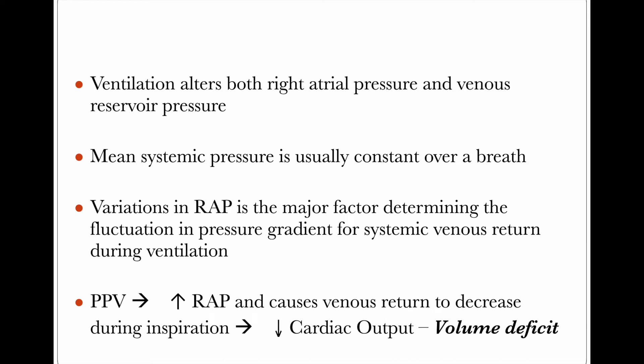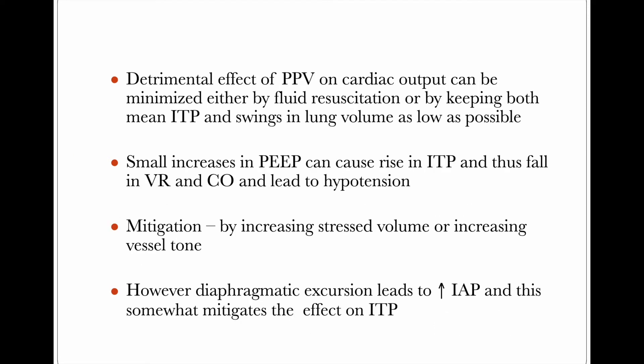If there is high pressure in the lungs because of positive pressure ventilation and there is a fall in cardiac output due to reduced venous return, that means the patient is in volume deficit. If we give more volume, more can be delivered to the left heart, increasing cardiac output. The detrimental effect of positive pressure ventilation on cardiac output can be minimized by fluid resuscitation to address volume deficit, or by keeping the mean intrathoracic pressure (ITP) and swing in lung volume as low as possible. If ITP is not raised much, venous return will not be affected.